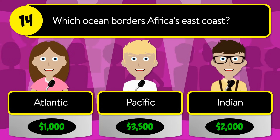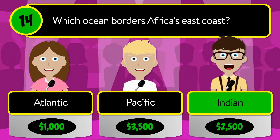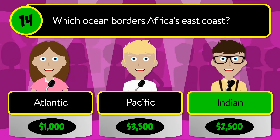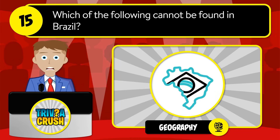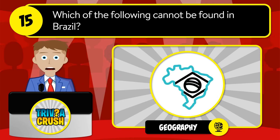Question number fourteen: which ocean borders Africa's east coast? Is it Atlantic, Pacific, or Indian? The correct answer is Indian.